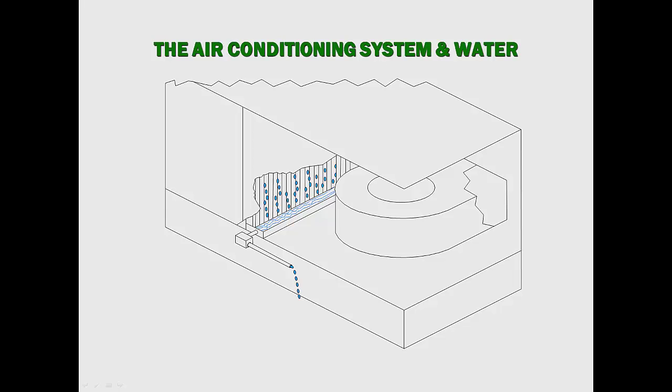In the air conditioning system, the only acceptable places for water are the cooling coil, condensate drain pan, and the drain system. All other places are unacceptable.